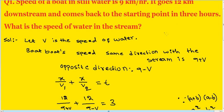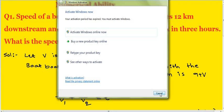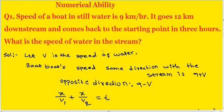Let v be the speed of water in the stream. The question states: speed of a boat in still water is 9 km per hour, it goes 12 km downstream and comes back to the starting point in 3 hours. The boat's speed in the same direction with the stream is 9 plus v (called v1), and in the opposite direction is 9 minus v (called v2).